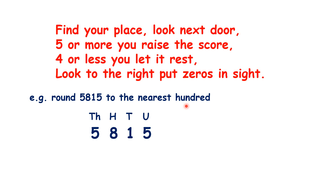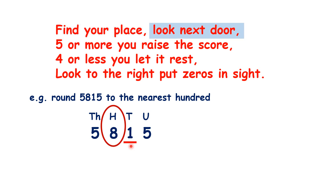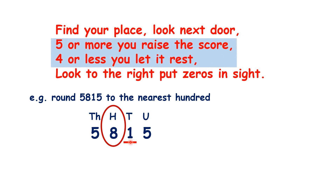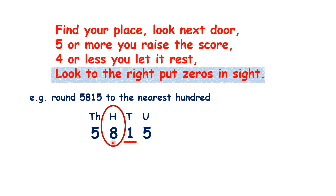But what about to the nearest hundred? We find the hundreds place, look next door at the tens, and because the tens digit is four or less — because it's only a one — we keep the hundreds digit the same and put zeros to the right, so we have 5,800 to the nearest hundred.